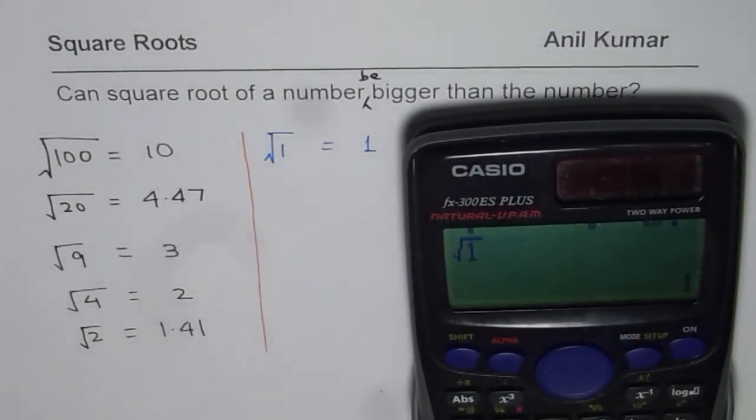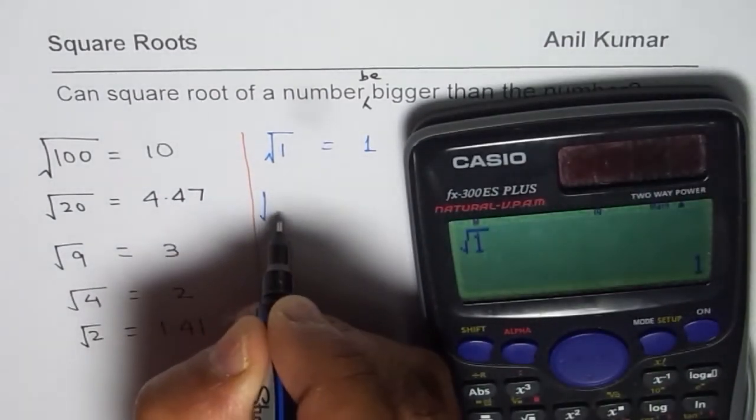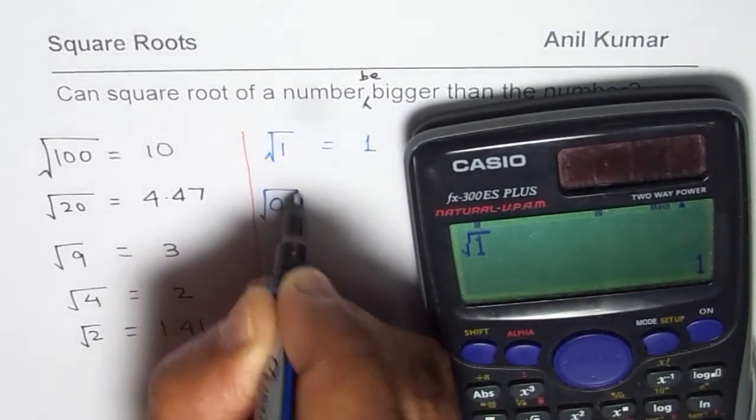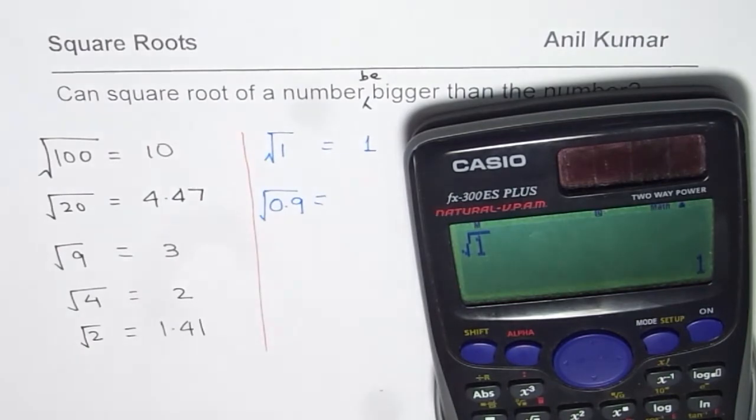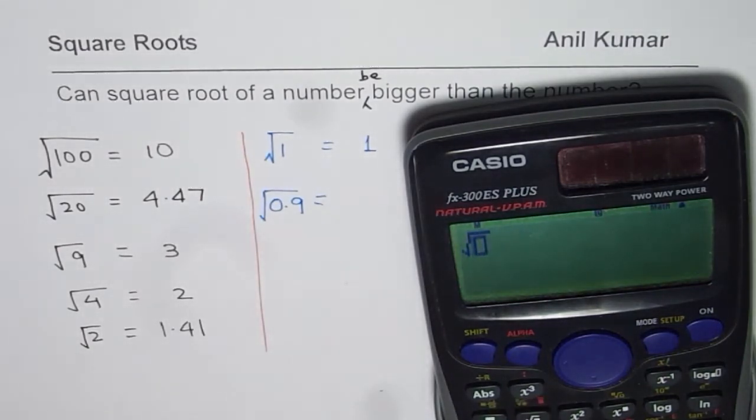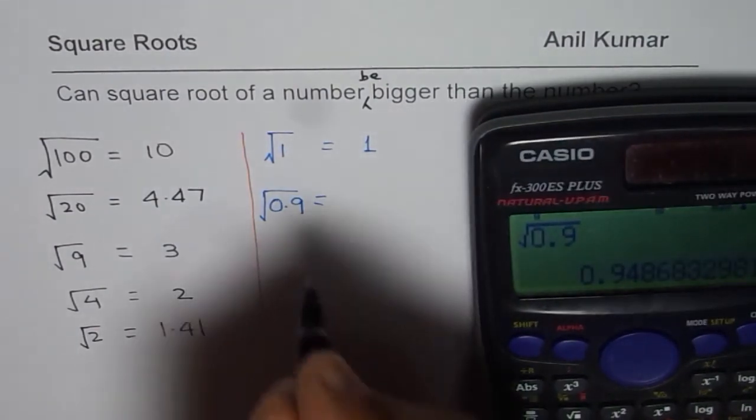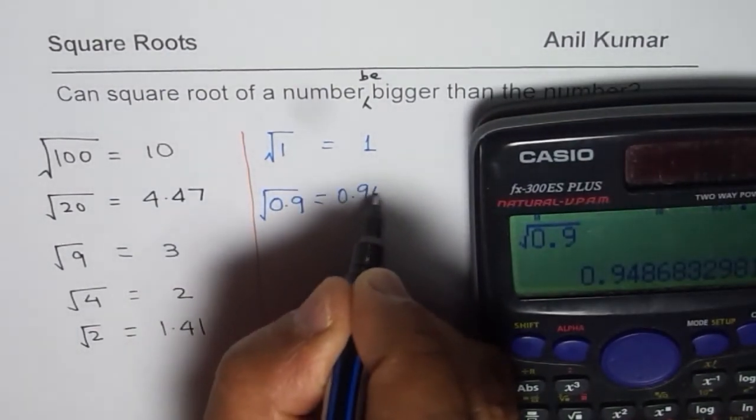Now, what will happen if I take a number smaller than 1? Let's try it out. Square root of, let's say, 0.9 equals to, this is smaller than 1. So we have square root of 0.9 equals to, let's convert to decimals, 0.948.